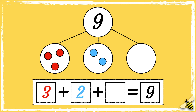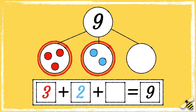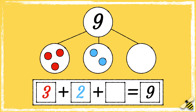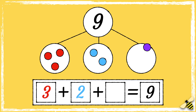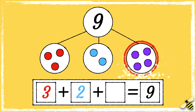So first we have three add two. Three, four, five. So we have five so far. Now we need to count on until we get to nine. Five, six, seven, eight, nine. How many purple spots did we add? We added four purple spots so four is the missing part.